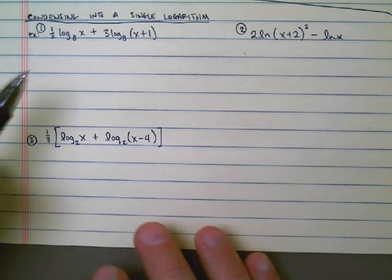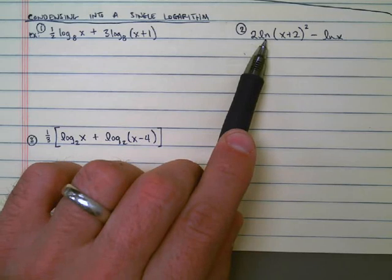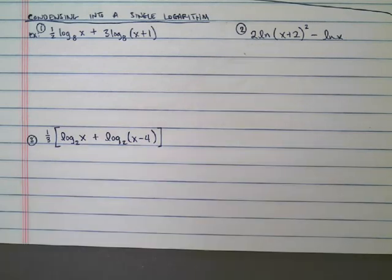So really what they're saying is they only want this L-O-G to be written out once, or in this case L-N, natural log. And so what I have to do is use the product rule, quotient rule, and power rules to condense these things. I'm really working backwards from the expansion that I did in the last video.